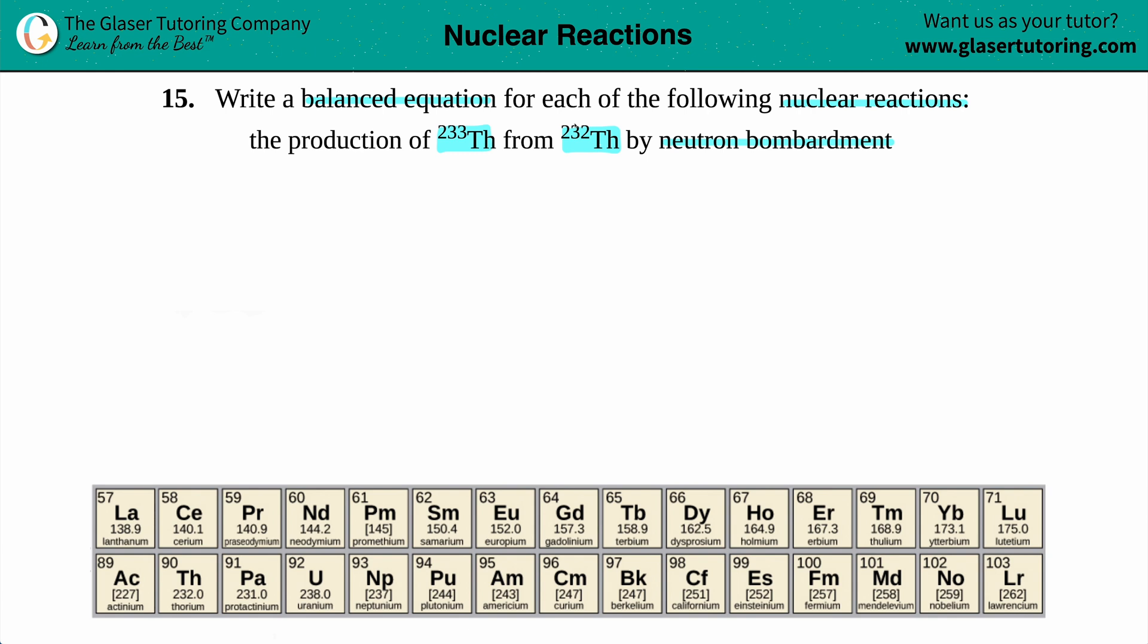Nuclei notation has three parts. There's always going to be a bigger box which means the atom, and then you have your top number and your bottom number. The top number is always the atomic mass, and the bottom number is always the atomic number.